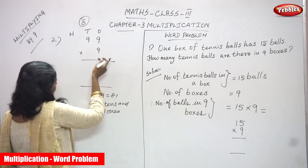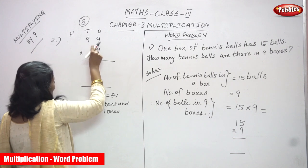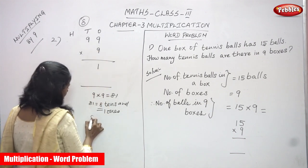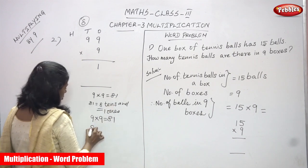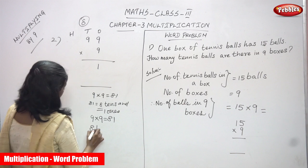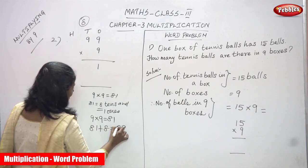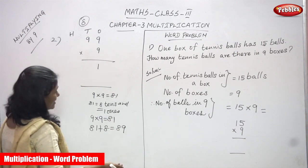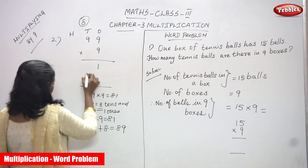Now again, I am going to multiply the 10s place value with 9. So, 9 9s are again 81. 81 tens plus the carryover 8 — so 8 plus 1 is 9, that is 89. We can call it as 89 tens, but exactly we must say 9 tens and 8 hundreds.